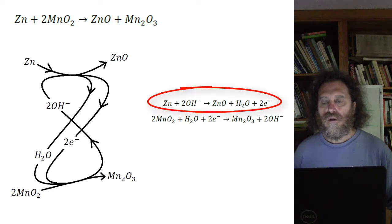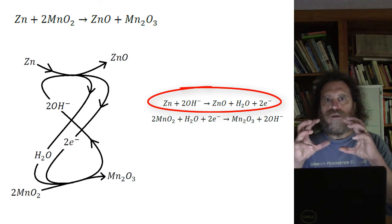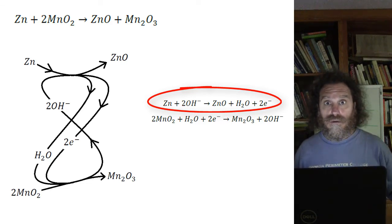In one compartment, zinc reacts with these OHs. OH is called hydroxide and it's an oxygen connected to a hydrogen atom. There's an extra electron, that's why the minus sign is there, it's an ion. Zinc combines with these hydroxides to make zinc oxide, a water molecule and two free electrons.